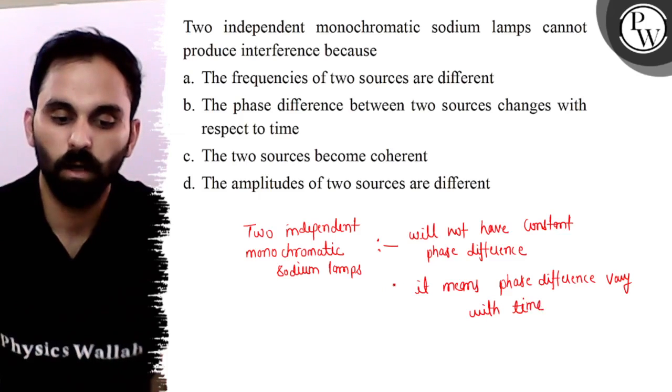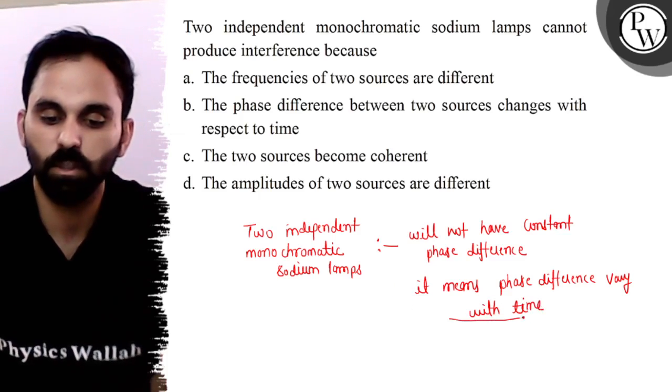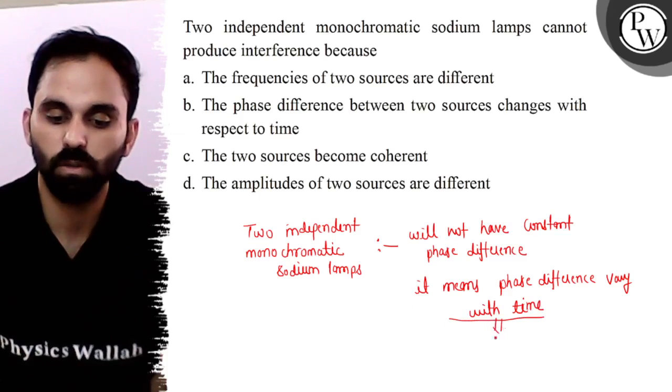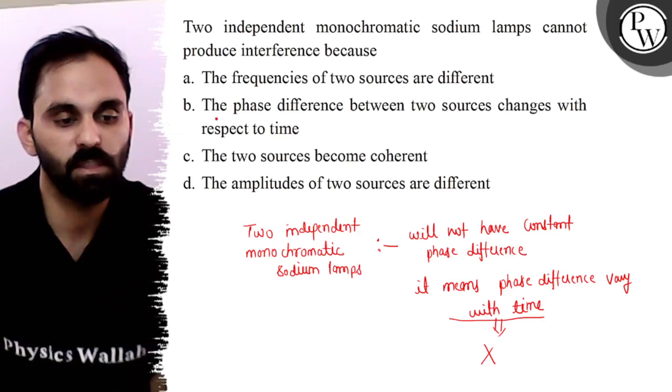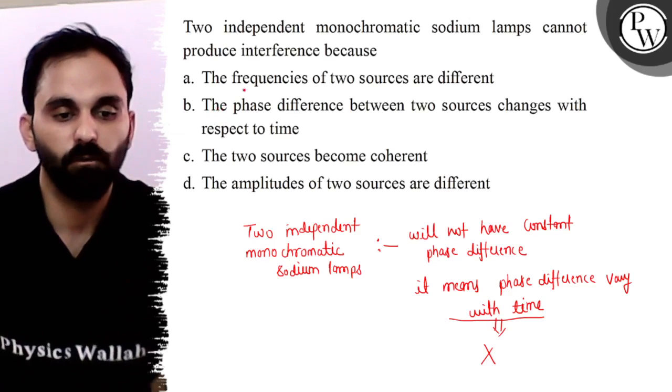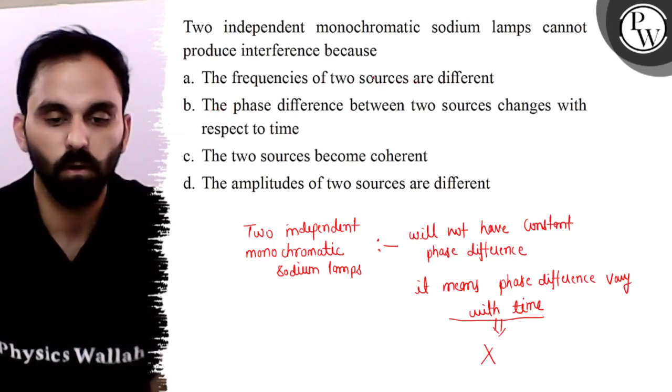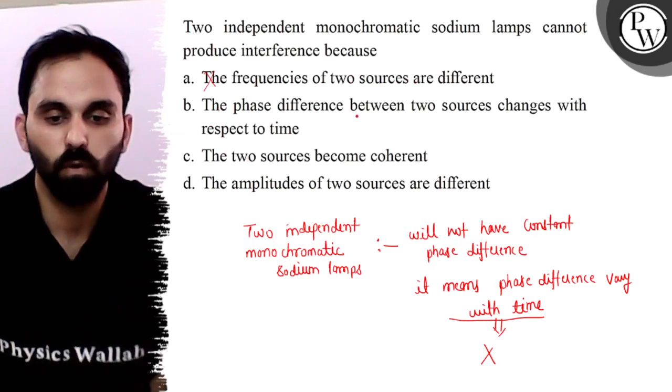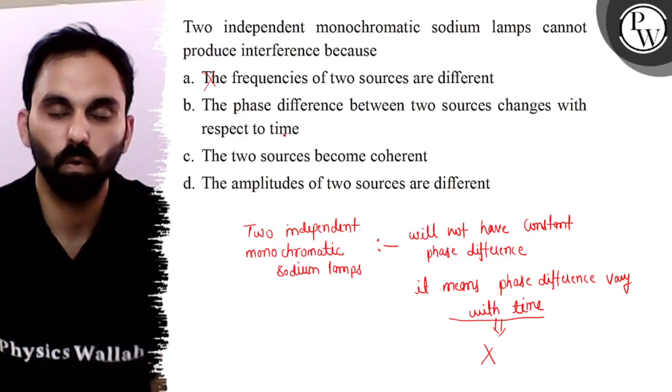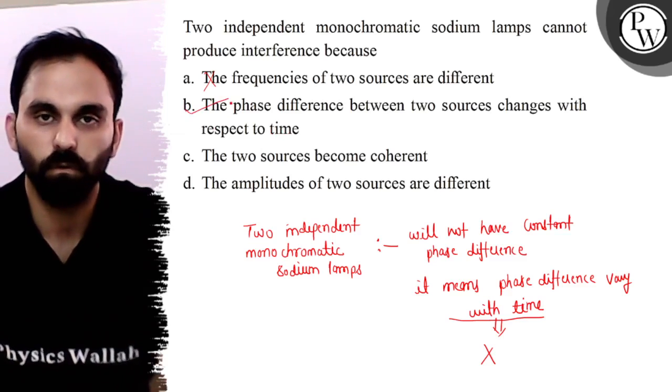If phase difference changes with time, then sources cannot produce interference. Option A, 'the frequencies of two sources are different,' is the wrong option. Option B, 'the phase difference between two sources changes with respect to time,' is the right answer. Clear? Thank you, best of luck.